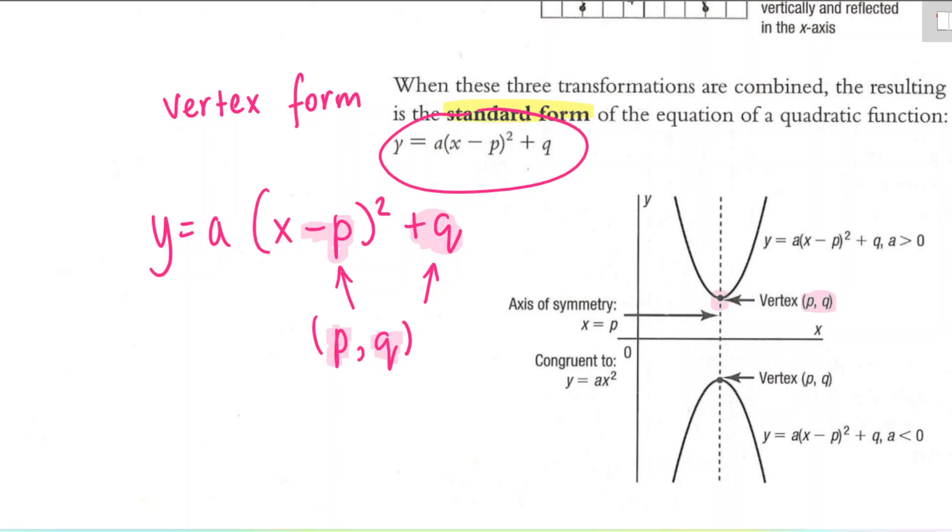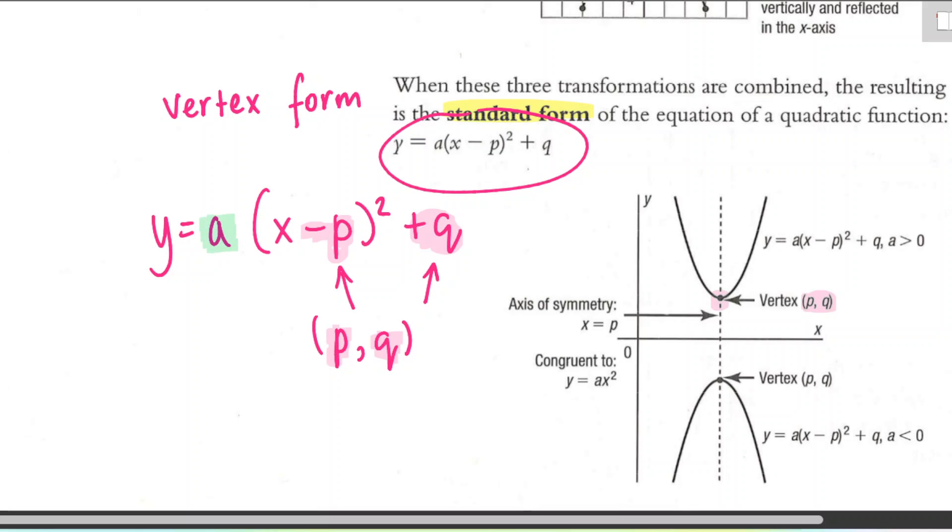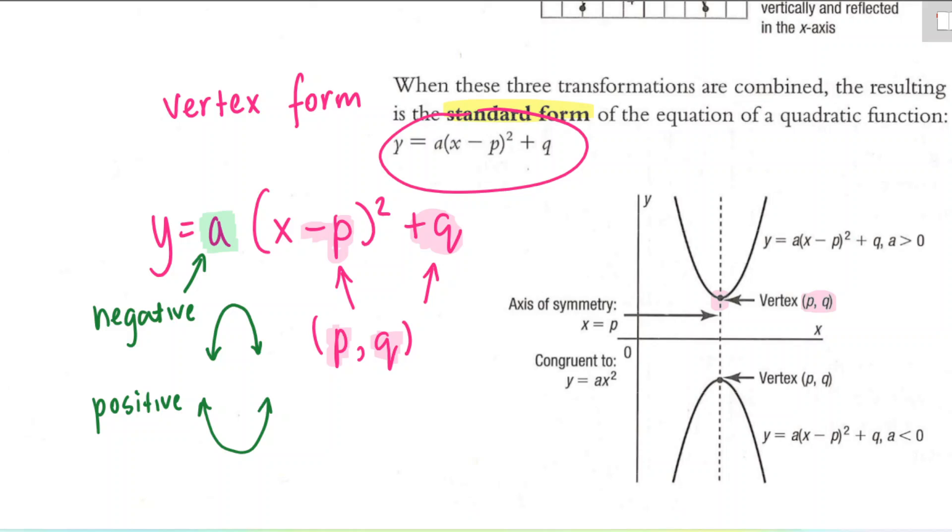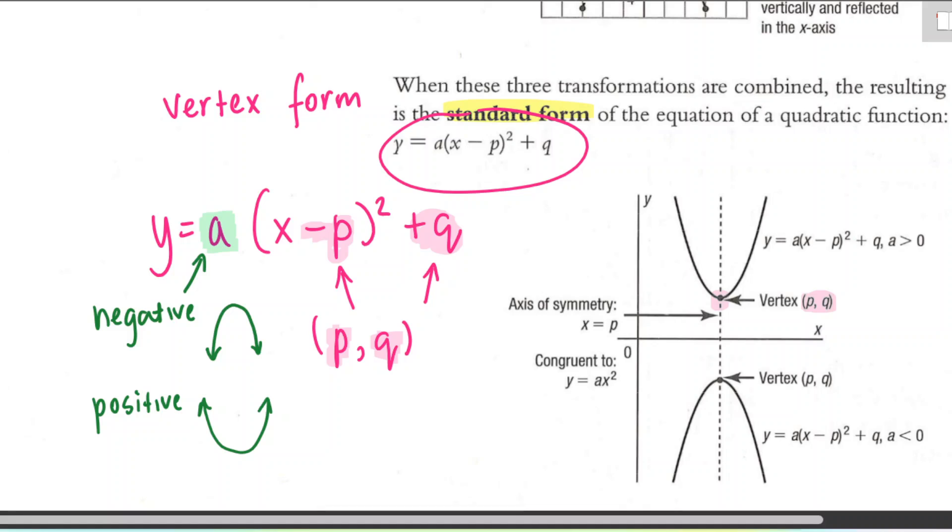The other thing we can tell is the direction of the opening and how steep the graph will be. So this is the same A value that's in the general form equation. If that A value is negative, then our parabola is going to be like a sad face. It's going to be facing downwards. And if that A value is positive, our parabola will be facing upwards. If that A value is large, we're going to have a really steep parabola. If that A value is small and close to zero, we're going to have kind of a shallower, more compressed parabola.